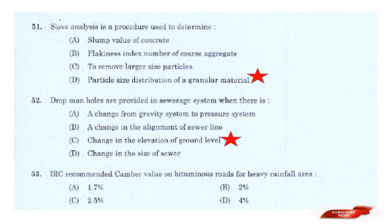Question: IRC recommended camber value on bituminous road for heavy rainfall area? Options: 1.7%, 2%, 2.5%, 4%. Answer: Option B — 2 percent. IRC recommended camber value on bituminous road for heavy rainfall area is 2%.